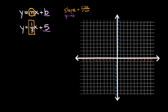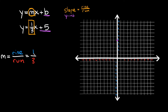Let's graph the y-intercept first because that's actually easier. If your y-intercept is at positive five, you come to your y-axis and put a point at positive five. Now for the slope — the slope is equal to the rise over the run, and in this case our slope is one over three. So we're going to go up one spot and then over to the right three spots, starting at our point.